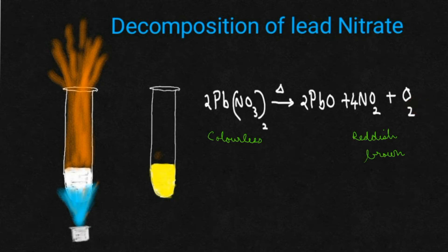What will be the color of the lead oxide? Once it is cooled, you can see that a yellow residue will be obtained at the bottom of the test tube. This is nothing but lead oxide. What is the color of lead oxide? Once it is cooled, it is yellow in color.